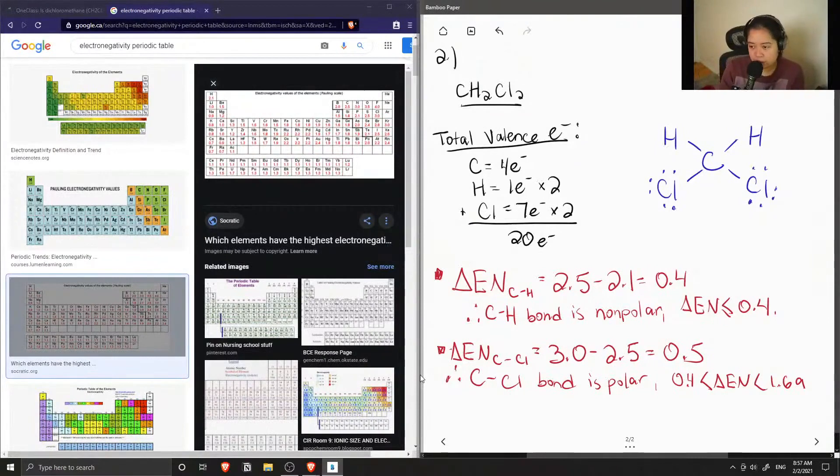So since we know that chlorine is polar, we can draw dipole moments going towards the direction of the chlorine like so.